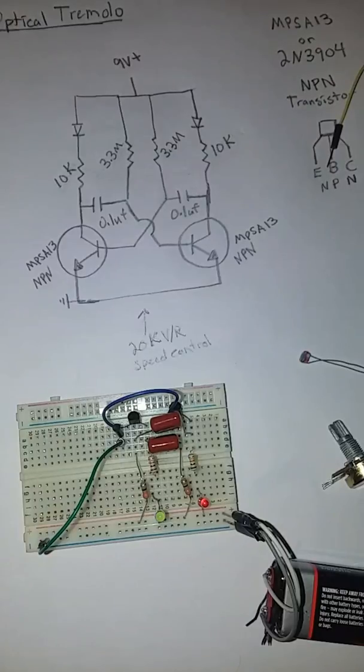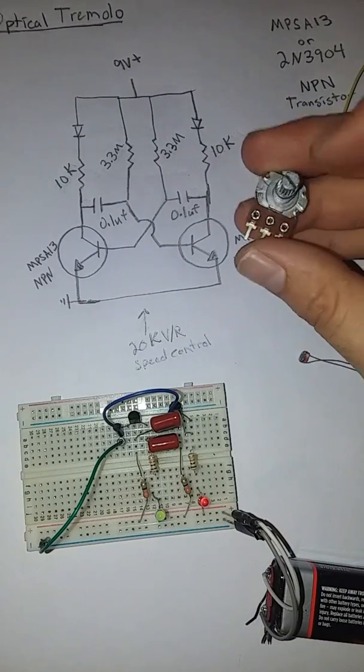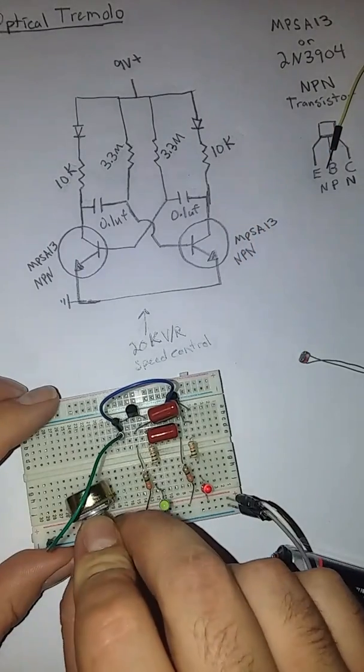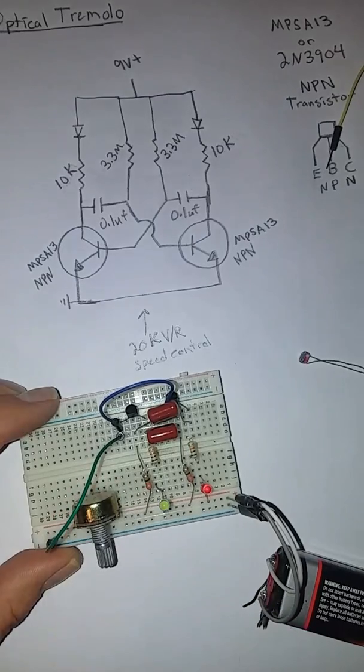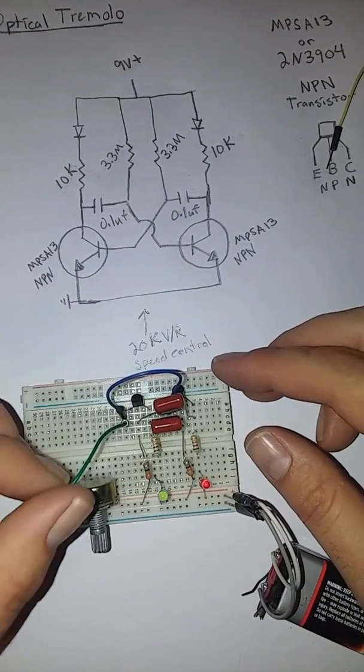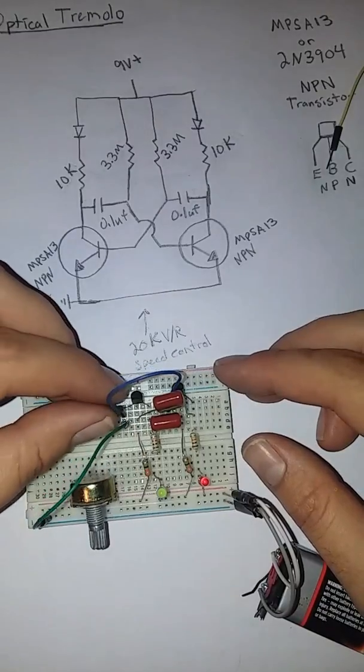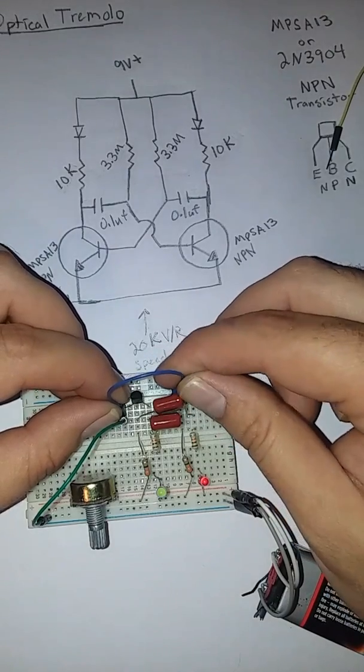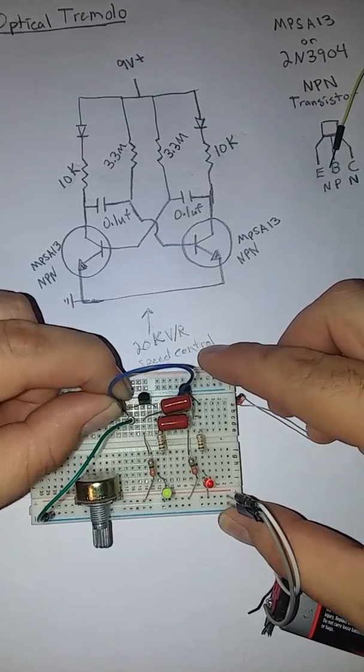But now what we need to do though is we need to be able to control the speed. And that's where this 20k variable resistor. We're using a 20k potentiometer. Now you still have your wire directly to ground going to your emitter. Now your wire that jumps across. The wire that goes in between the two emitters. You want to take that and unhook it.